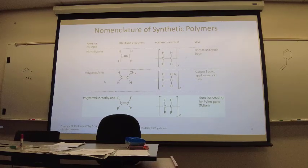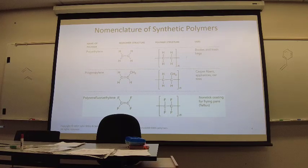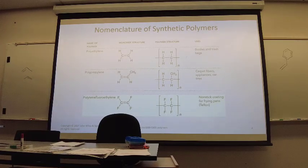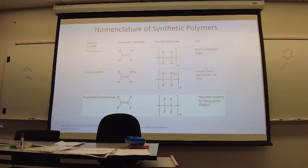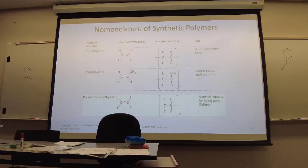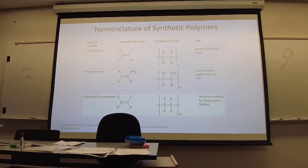Now I want you to learn some of these by name. Polyethylene — that's bottles and trash bags, literally the cheap white plastic bags you're no longer supposed to use. It's predominant, all over the place. Polypropylene — one little extra carbon makes enough intermolecular force that it gets a little stronger. It would be more like a durable carpet fiber. It says car tires, but that means it's an additive to car tires — I'm certainly not making car tires out of pure polypropylene.